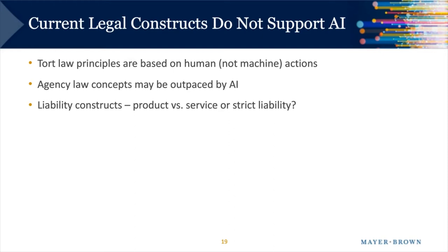Second, agency law. In common law and contract law principles, principal and agency relationships usually exist between two individuals. Will laws of agency apply when an autonomous machine or neural network decides what to do? At what point is the scope of agency fundamentally exceeded or changed by a machine or an algorithm? And then finally, liability constructs: is AI a product or a service? Software historically has been treated more as a service than a product, with breach of warranty applying rather than product liability. But when you combine AI with physical products and the Internet of Things, which area of law applies? We currently hold people strictly liable when they keep dangerous animals that escape and cause harm — will we similarly hold the creators of AI strictly liable for damages it causes?